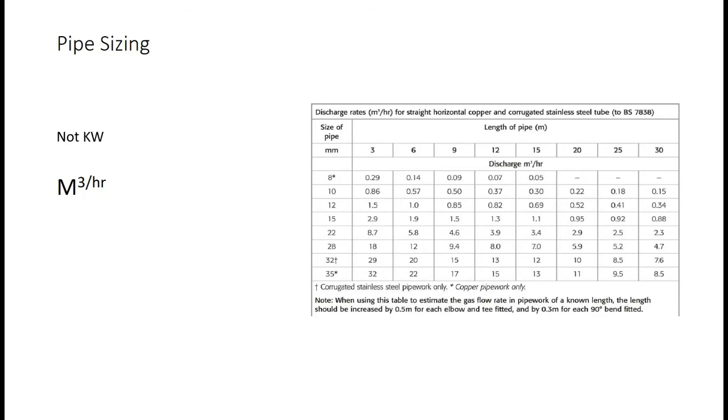Remember when we're pipe sizing we don't use kilowatts in the calculation itself. We have to convert the kilowatts into metres cubed per hour in order to do the calculation. It's very easy to do, you simply multiply the kilowatts by 0.094.